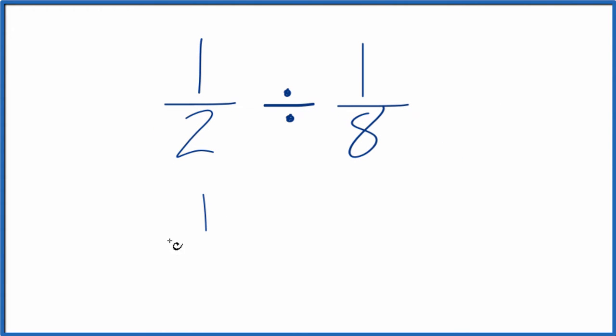First, we could just say that we have 1 half here, and instead of division, we'll call it multiplication. But we're going to multiply by the reciprocal. That means we move the 8 here and the 1 here.